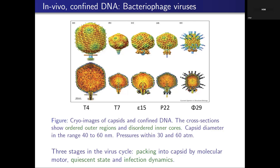This is a cross-section cryo-image of different viruses. You see here an ordered region and then in the middle something that looks more disorganized — that is called the core. The lines you see around the capsid are not really the DNA themselves, but projections. The DNA would come out perpendicular to the board, so what we see is the projection of the ends.